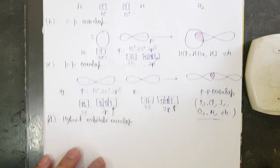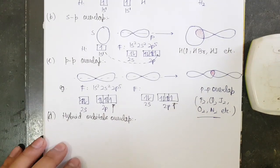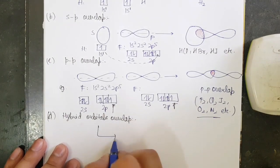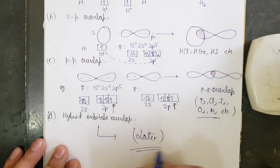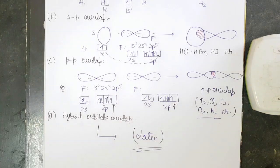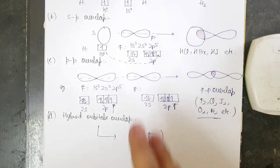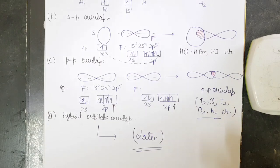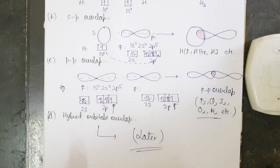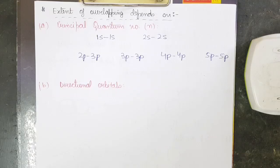The next type is hybrid orbital overlap, which will be dealt with later when we discuss hybridization. So this covers sigma overlap — whenever coaxial overlapping occurs, a sigma bond is formed.